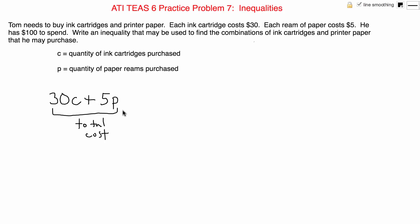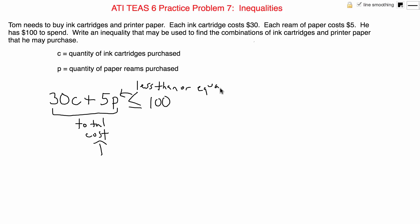Now another thing we have to consider is how much he has to spend — this is where the inequality comes into play. He has $100 to spend, so we know that we have to use an inequality representing him spending less than or equal to $100. The pointy side of the inequality will always face the algebraic expression in question. So the total cost that Tom pays for the cartridges and the paper will have to be less than or equal to $100. That is our expression.